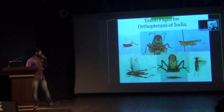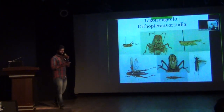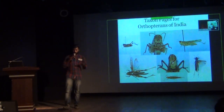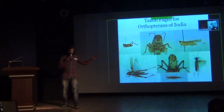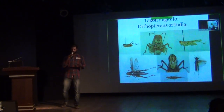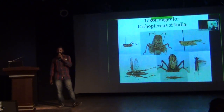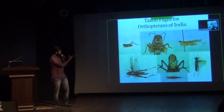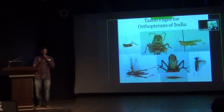These are some pictures from the Orthoptera of India page, which is going to be launched on the India Biodiversity Portal shortly — maybe in another month or so. It will have around 1,200 species with stackshot images, which I will speak about shortly.